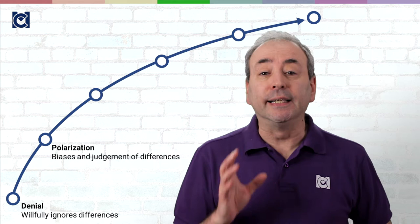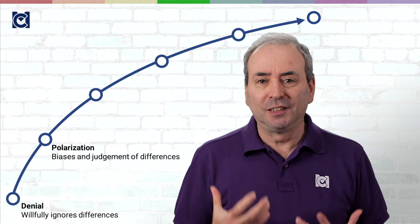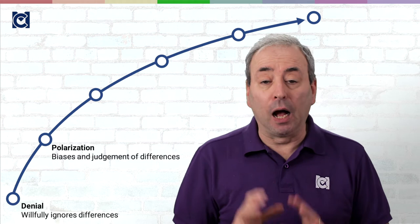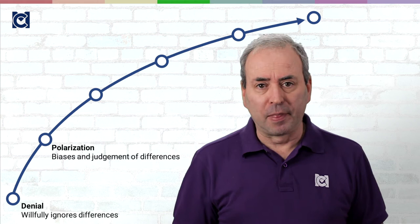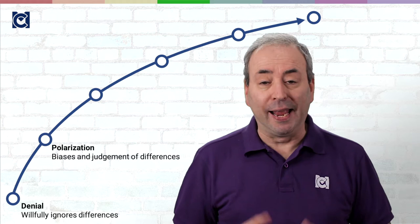The second stage is polarization. Individuals who are different are pushed to the outside of the team. What we find is that biases and judgments about people because of their cultural differences prevail within the team. There is a tacit assumption that the majority are right and anyone who is different doesn't fit.